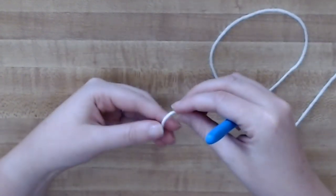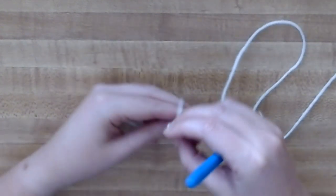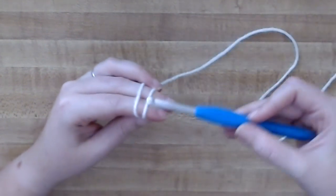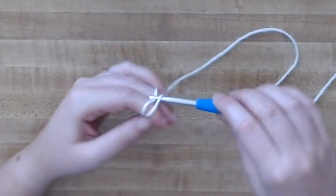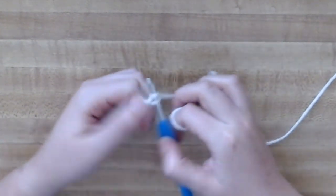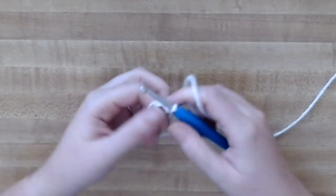Okay, to start you're going to want to start with a magic ring or circle, and then in that ring you need to put five single crochets.